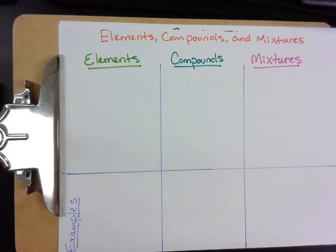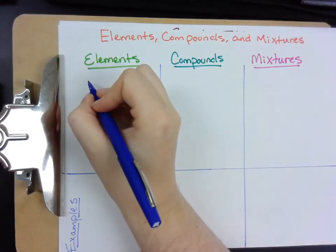So we're starting with elements, compounds, and mixtures. We're trying to decide the differences between them and what each of them actually represents. So to start off with, we're going to start with elements.